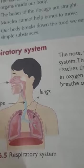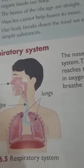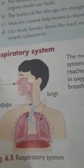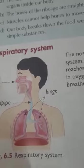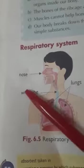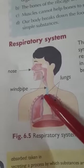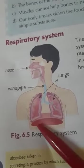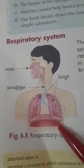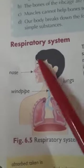The nose, windpipe, and lungs make up our respiratory system. Air enters through the nose, reaches the lungs through the windpipe. The lungs take in oxygen from the air and give out carbon dioxide. As air is a mixture of many gases, oxygen is absorbed by the lungs, mixes with the blood, and goes to all parts of the body, while carbon dioxide is breathed out.